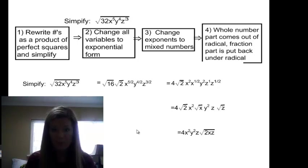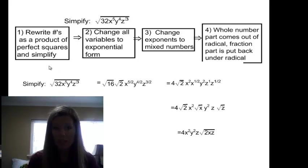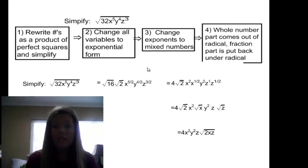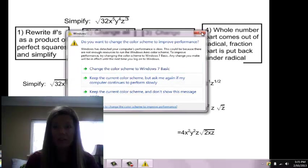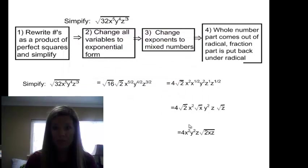So this is the first method. To recap the steps: rewrite the number as a product of perfect squares, as I did with 32. Change all variables to exponential form. Change exponents to mixed numbers. And the fraction parts that result from converting to mixed numbers go back under radicals.